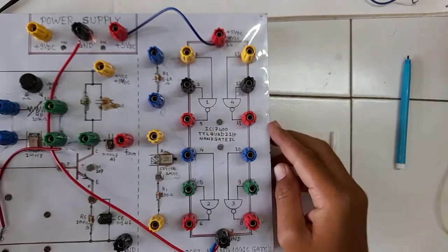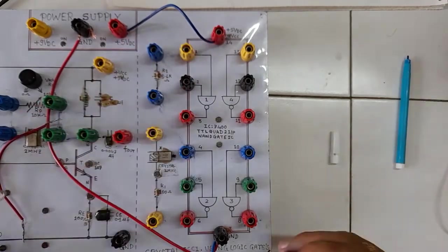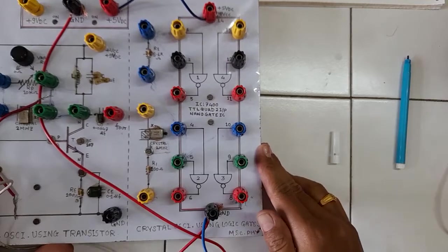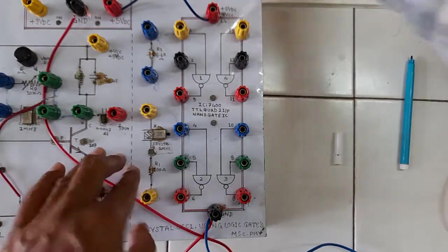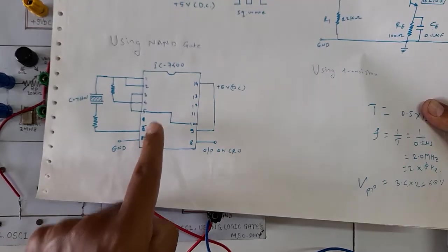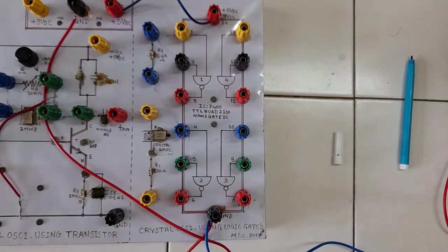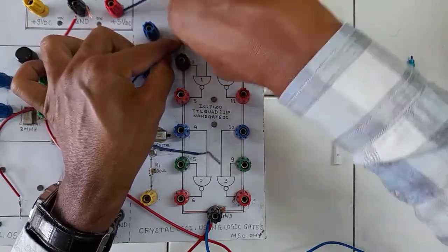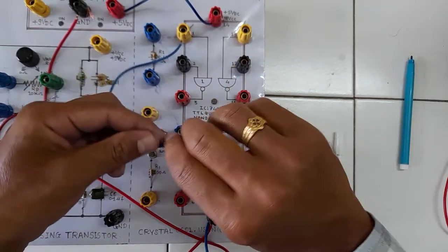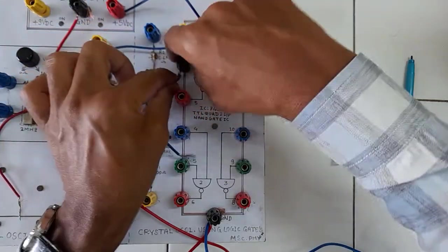Now the other part of the experiment is the crystal oscillator using NAND gates. The ground and plus VCC connections are already made. This is the crystal oscillator using logic gates. I will make the connections as per the circuit diagram — you can follow either diagram. Starting from the first terminal: pins 1 and 2 are common, and that is given to one side of the crystal.